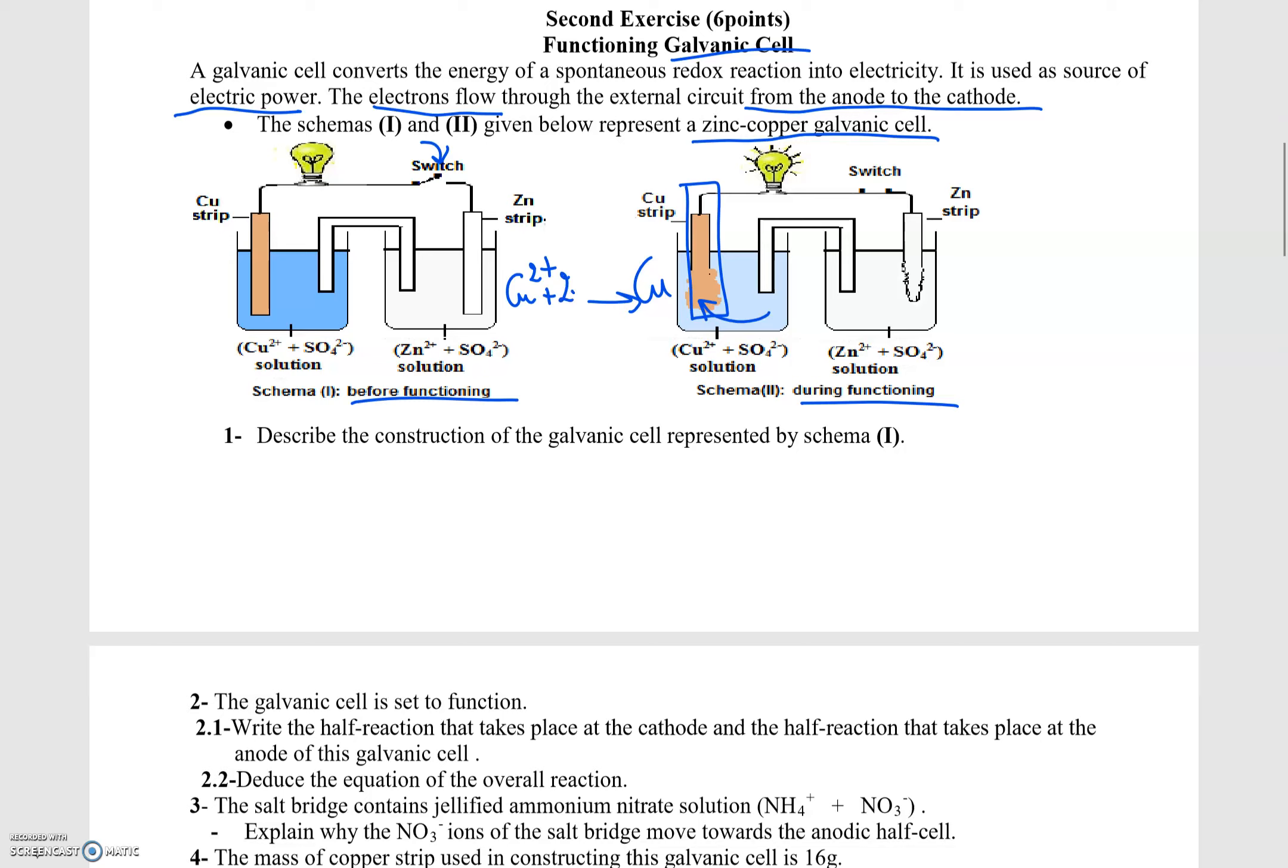This means that the ions Cu²⁺ are becoming metal Cu and depositing from the solution to the metal strip. So they are gaining electrons. This means they are doing a reduction, and this is the cathode. This logical reasoning we need to do always in this type of exercise. The strip that is thickening due to deposit—the ions are becoming metals, thus gaining electrons in reduction. And this is the cathode.